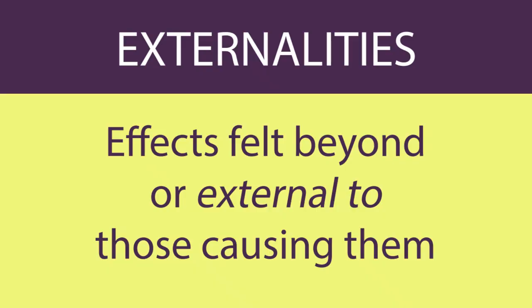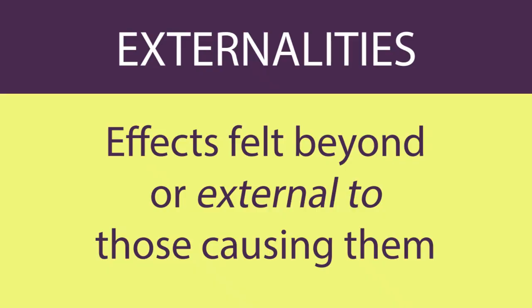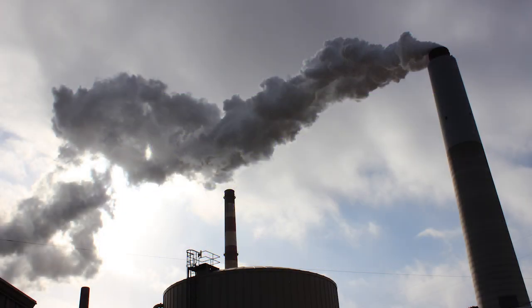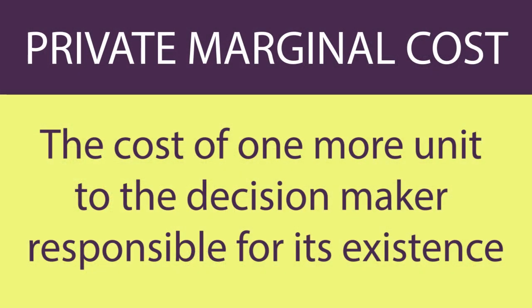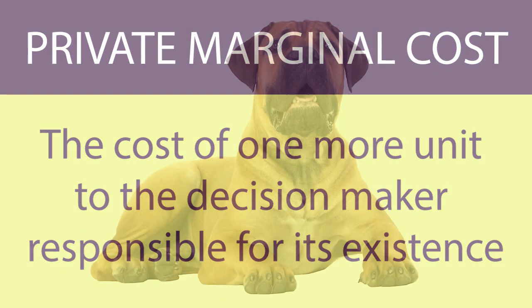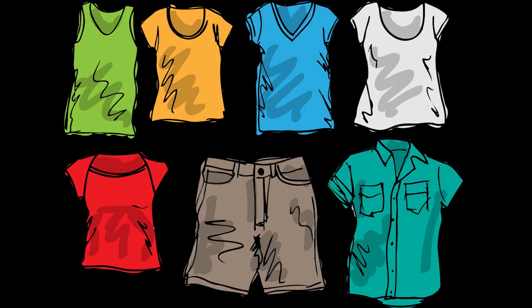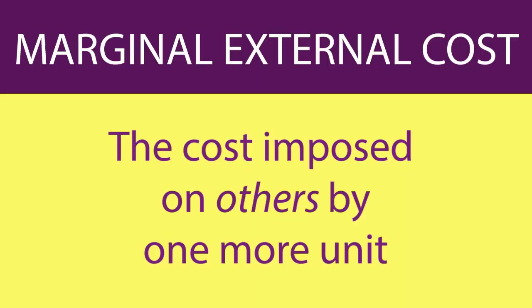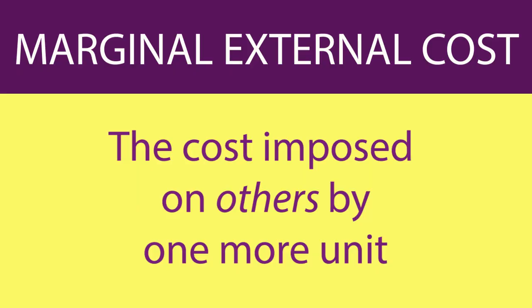Externalities are effects felt beyond or external to those causing them, such as the effects of pollution. The private marginal cost of something is the cost of one more unit to the decision maker responsible for its existence, which might be the person who decides to own another noisy dog or the firm that decides to produce another article of clothing. The marginal external cost is the cost imposed on others by one more unit.